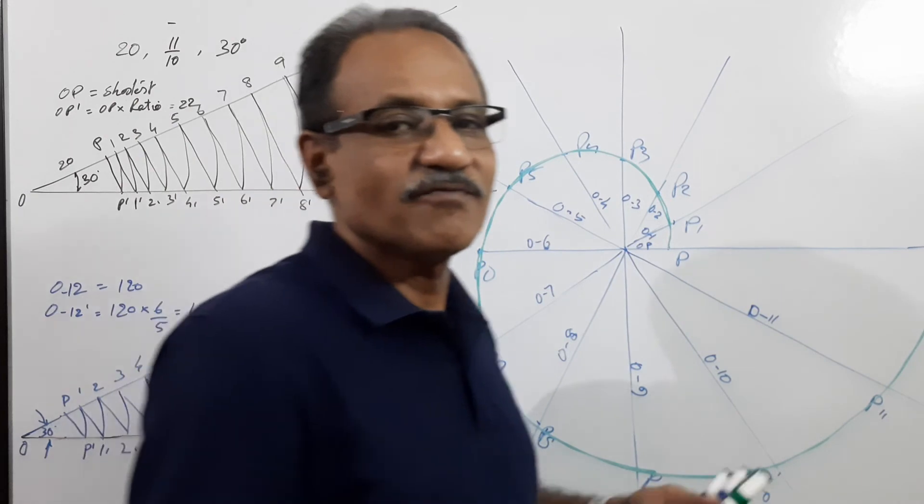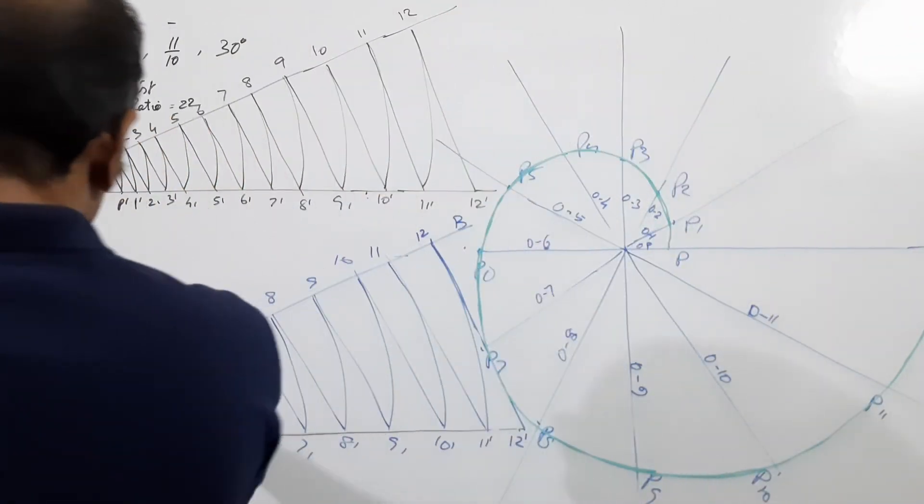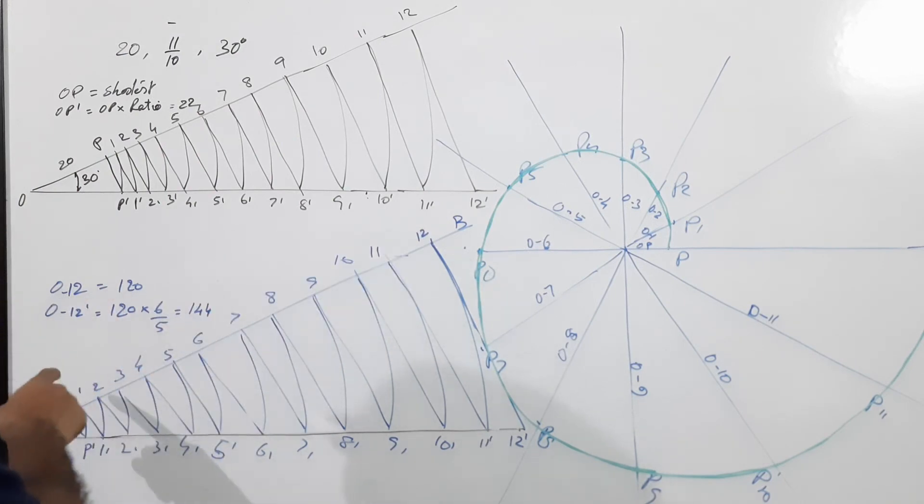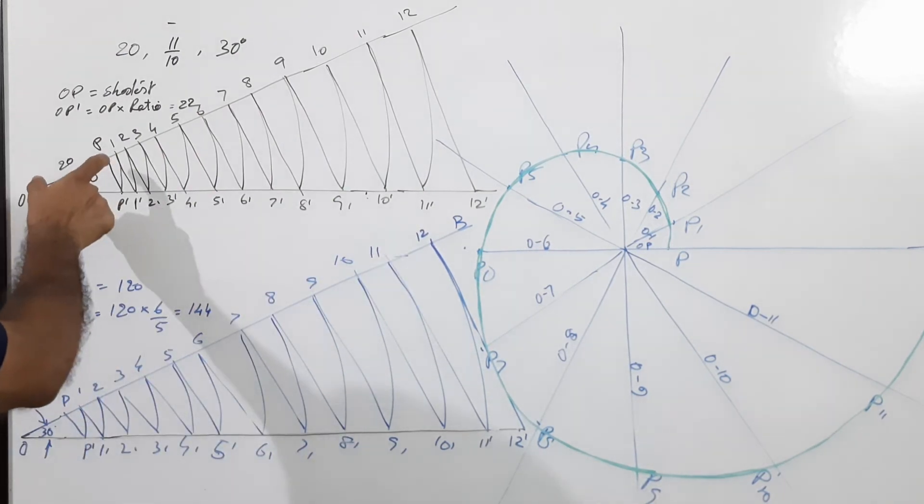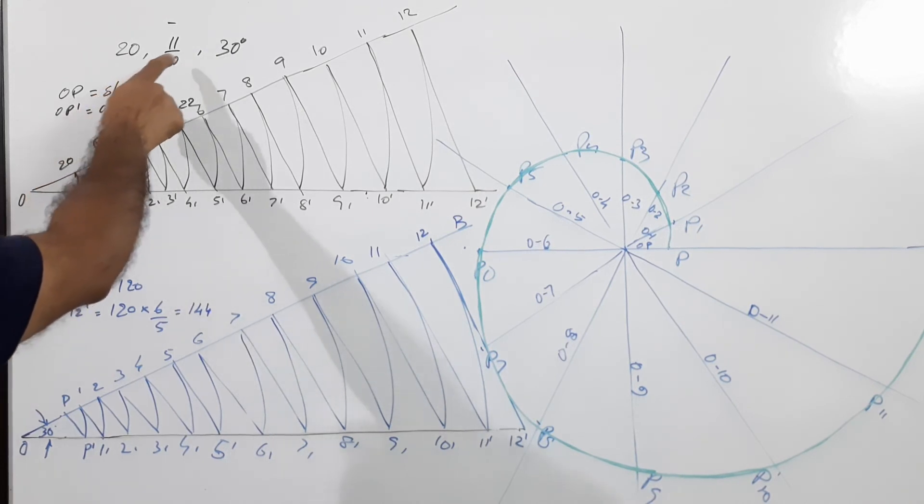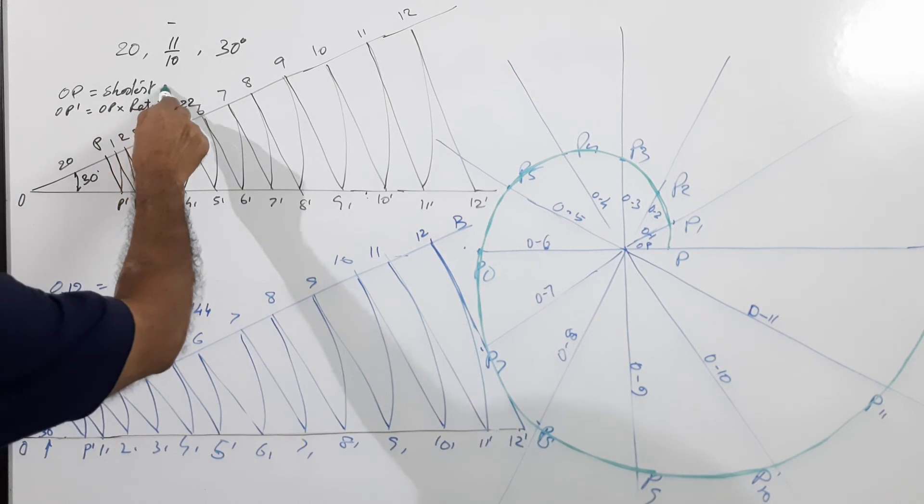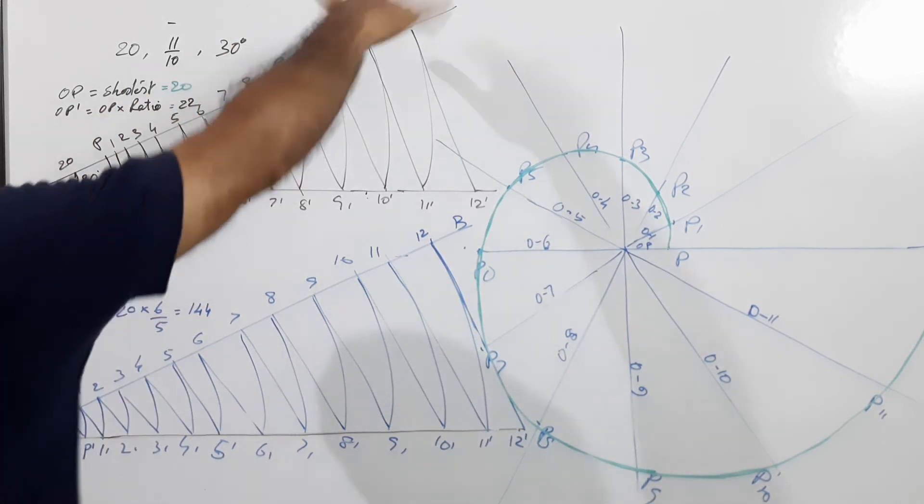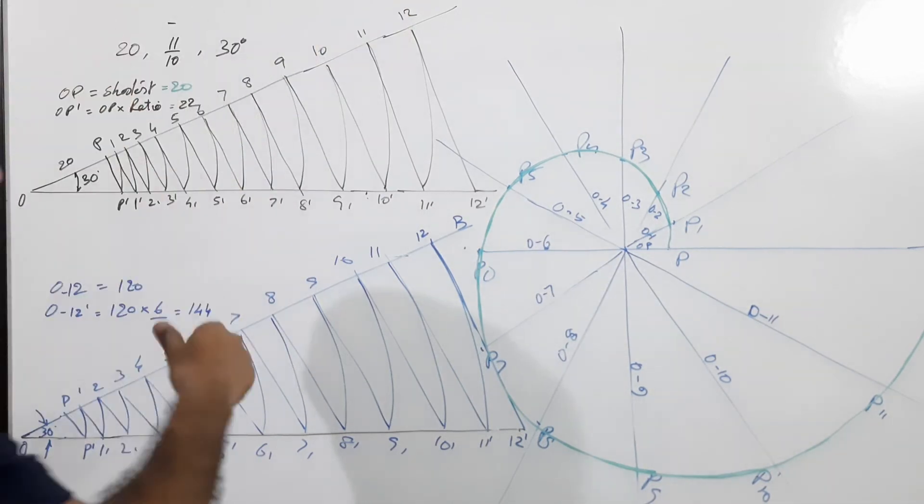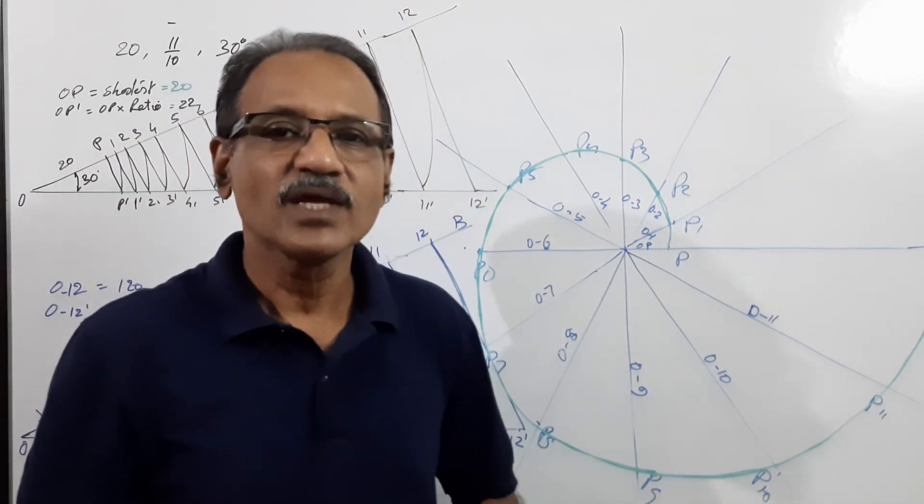You can compare these two so that you will find it easy when the largest is given or the smallest is given. O12 equals 120, the largest radius. Here OP equals 20, the shortest radius. Draw arcs and go outside, go outward here. In the other case, go inward, come inward.